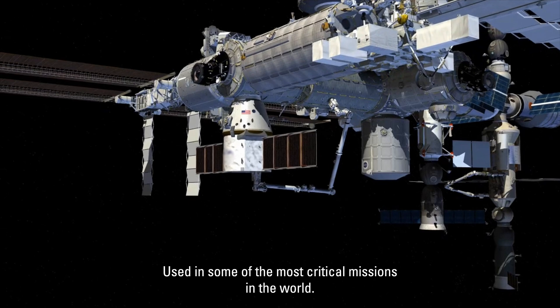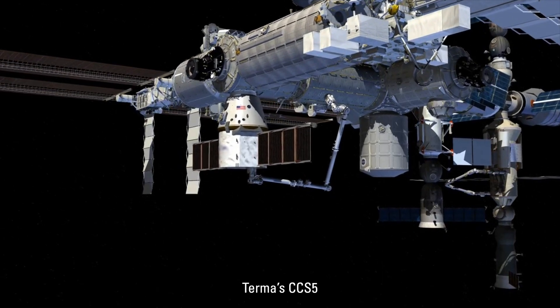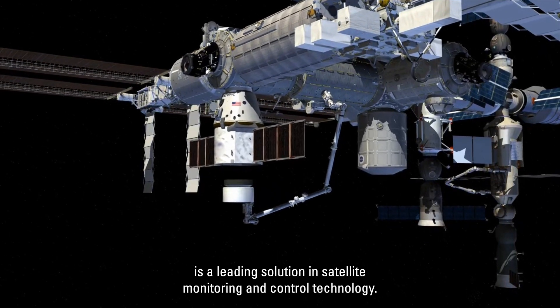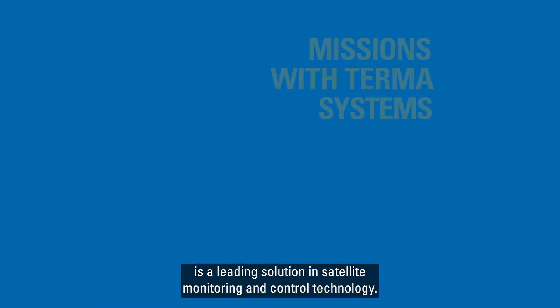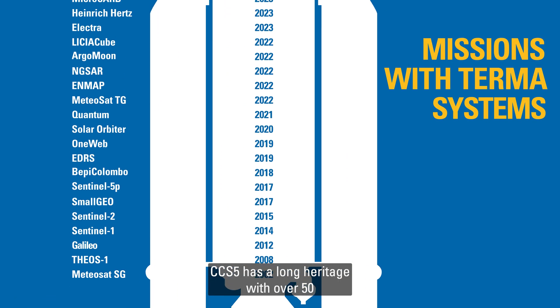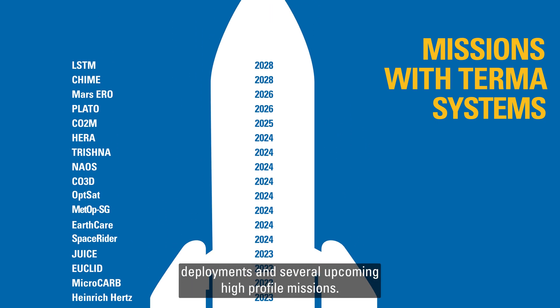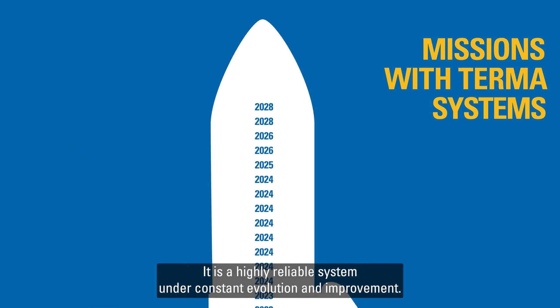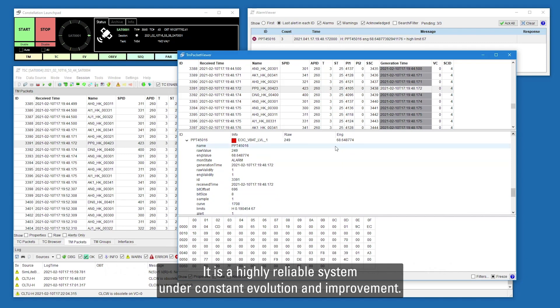Used in some of the most critical missions in the world, TERMA's CCS-5 is a leading solution in satellite monitoring and control technology. CCS-5 has a long heritage, with over 50 deployments and several upcoming high-profile missions. It is a highly reliable system under constant evolution and improvement.